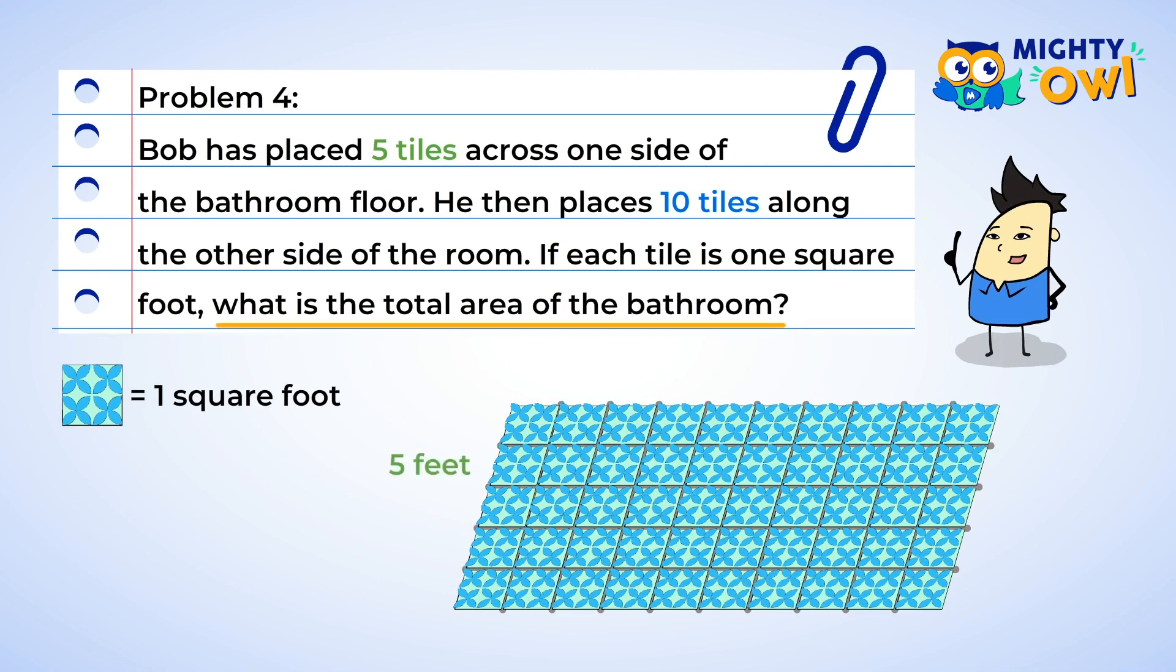So our length is five feet since there are five one foot square tiles. And our length is 10 feet since there are 10 one foot tiles. And when we multiply five and 10, we get 50. So the bathroom is 50 square feet. Whew!